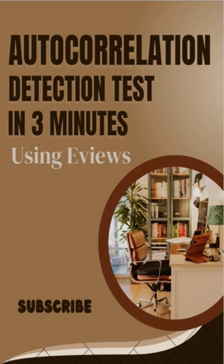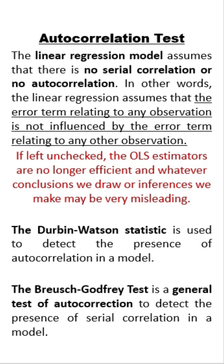Hello guys, welcome to Jagametrics. We are looking at autocorrelation detection tests using eViews. The linear regression model assumes that there is no serial correlation or no autocorrelation — in other words, the linear regression assumes that the error term relating to any observation is not influenced by the error term relating to any other observation. If left unchecked, the OLS estimators are no longer efficient, and whatever conclusions or inferences we make will be very misleading.